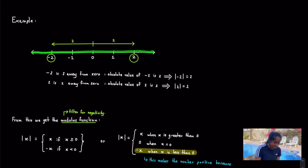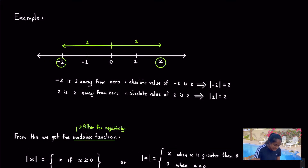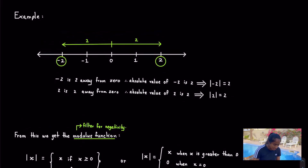On a number line, we have to find the modulus of 2 and minus 2. We draw the line, find the origin, and locate the values we're working with — in this case 2 and minus 2. We can see that 2 is 2 away from the origin, and minus 2 is also 2 away from the origin. So although one is positive and one is negative, the modulus value is the same.